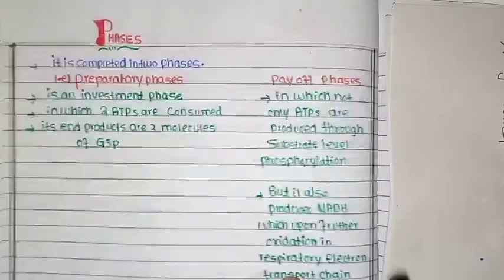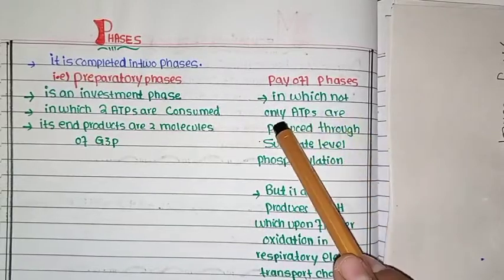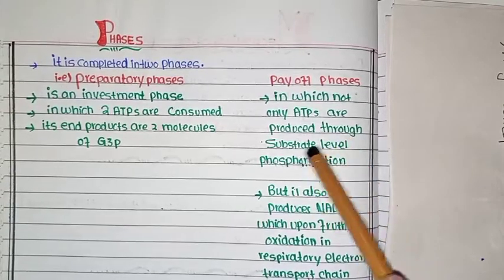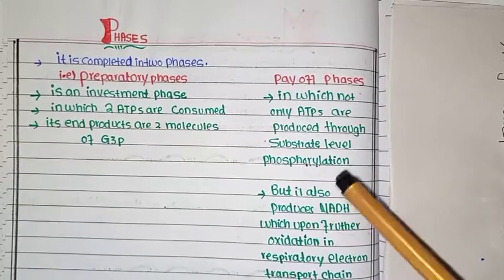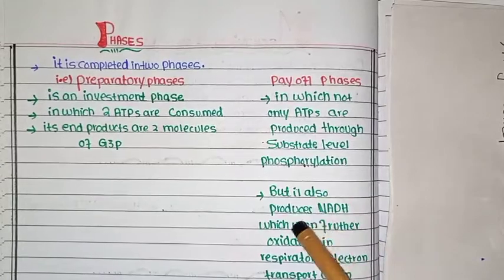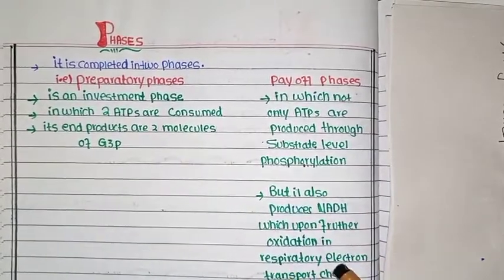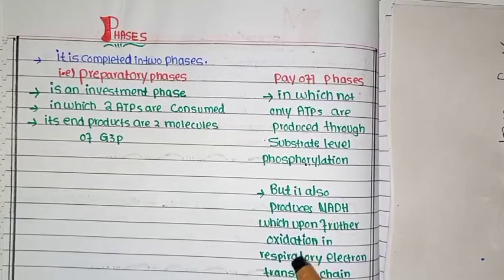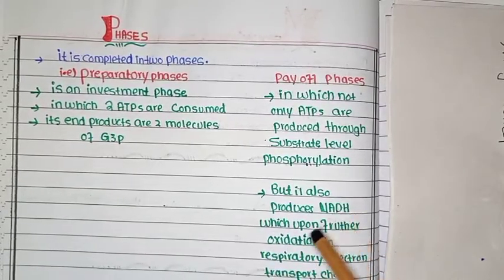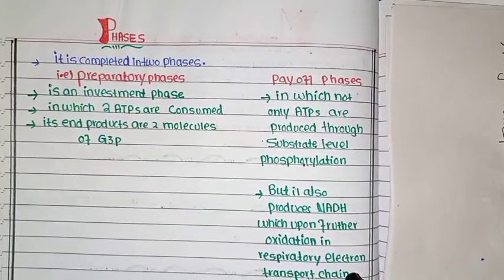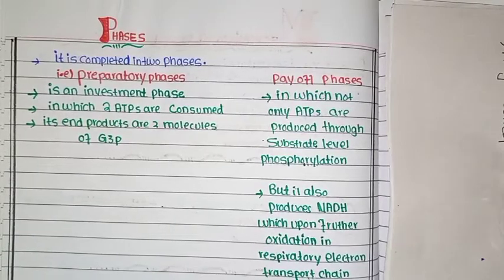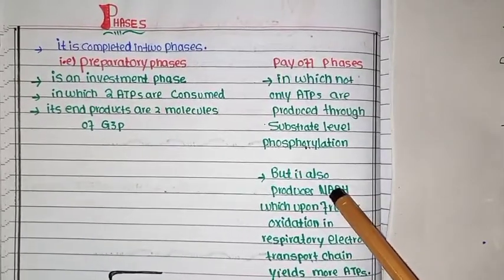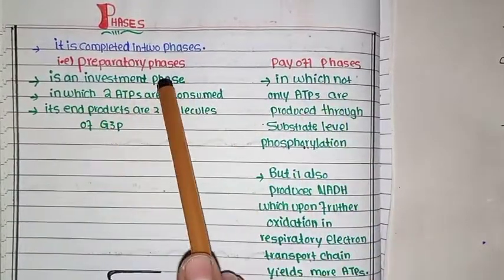In the payoff phase, not only are ATPs produced through substrate-level phosphorylation, but it also produces NADH. This NADH is further oxidized in the respiratory electron transport chain to produce more ATPs. Oxidized here means hydrogen is removed, and the respiratory electron transport chain then produces more ATP.